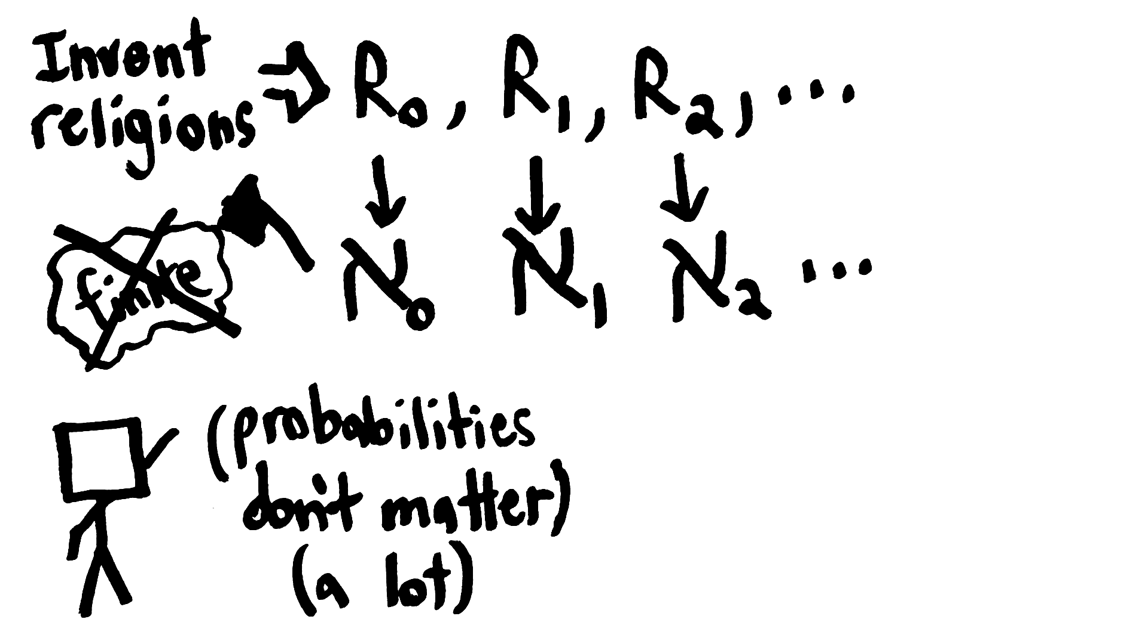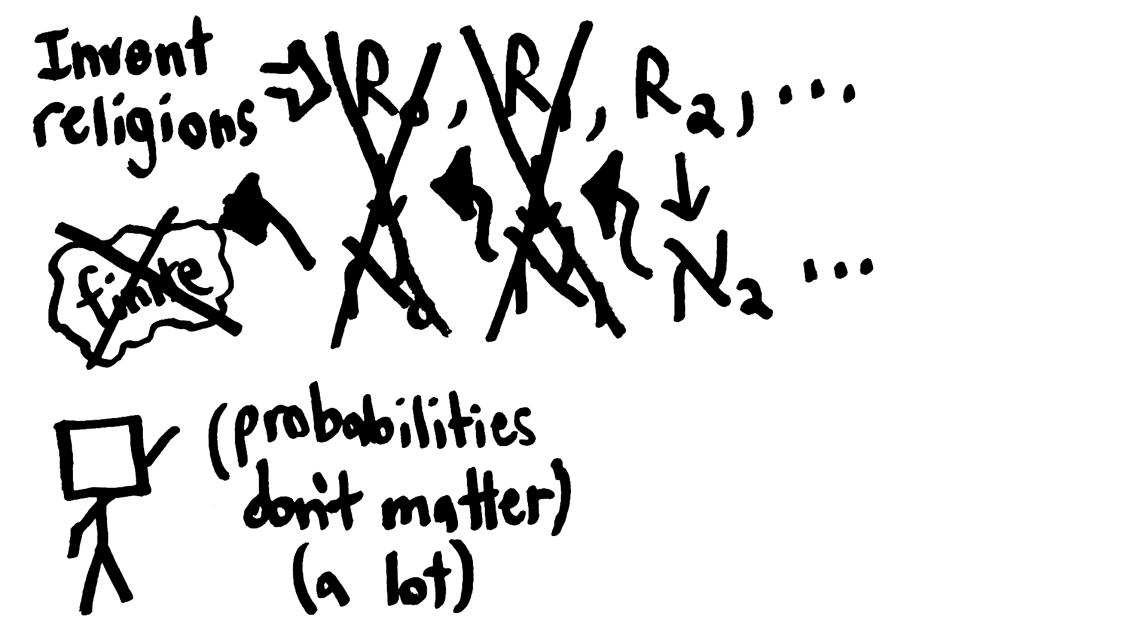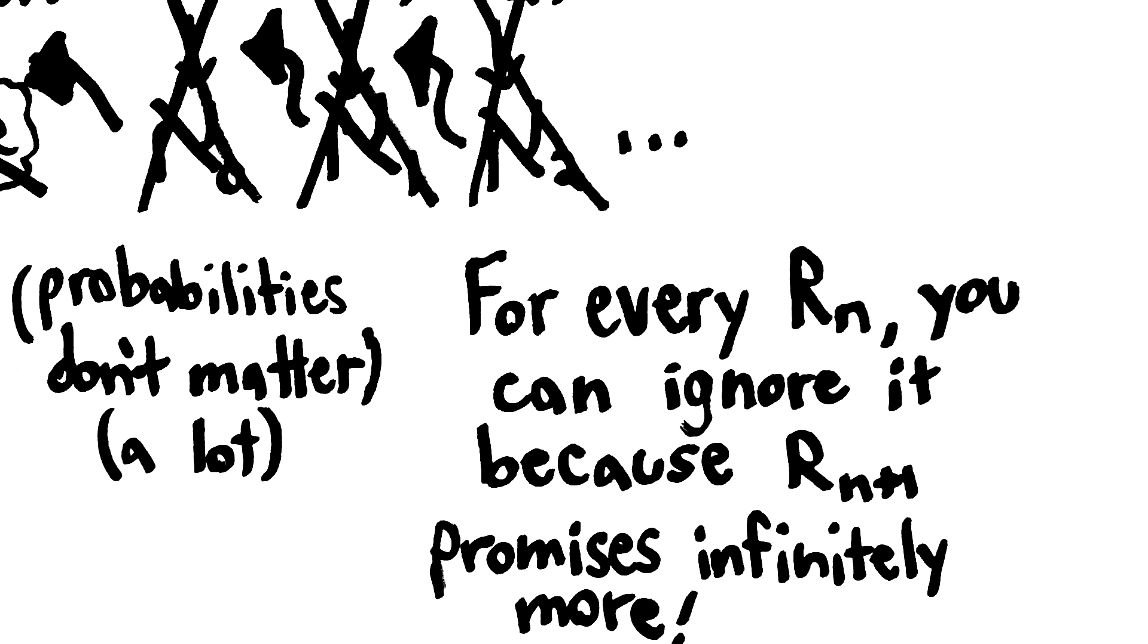Now, the promise of Religion 0 should annihilate any consideration of mere finite utility, because Aleph 0 obliterates the finite by being so much bigger. And Religion 1 should annihilate any consideration of Religion 0, because Aleph 1 obliterates Aleph 0 by being so much bigger. And Religion 2 should annihilate any consideration of Religion 1, because Aleph 2 obliterates Aleph 1 by being so much bigger, and so on. We can, by this logic, conclude that for every religion n, we can ignore it because of the promise of religion n plus 1, it obliterates it.